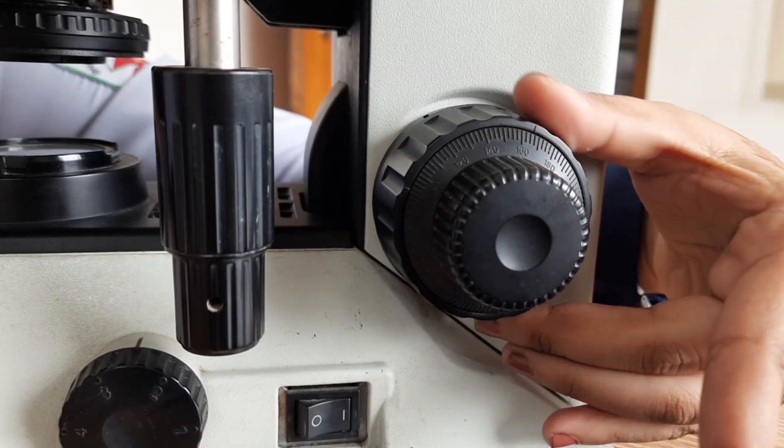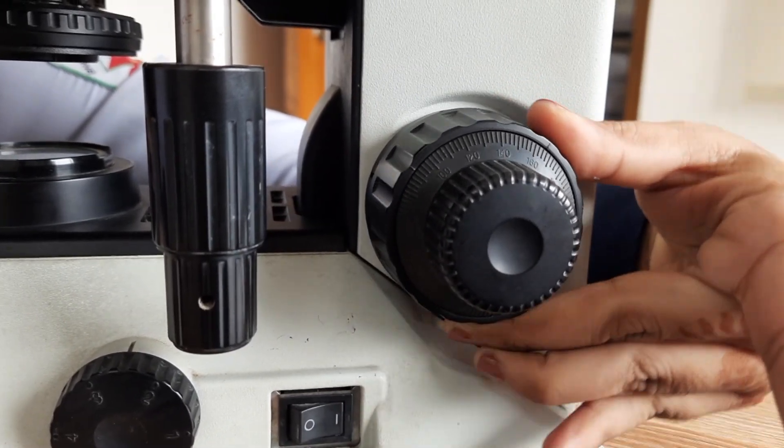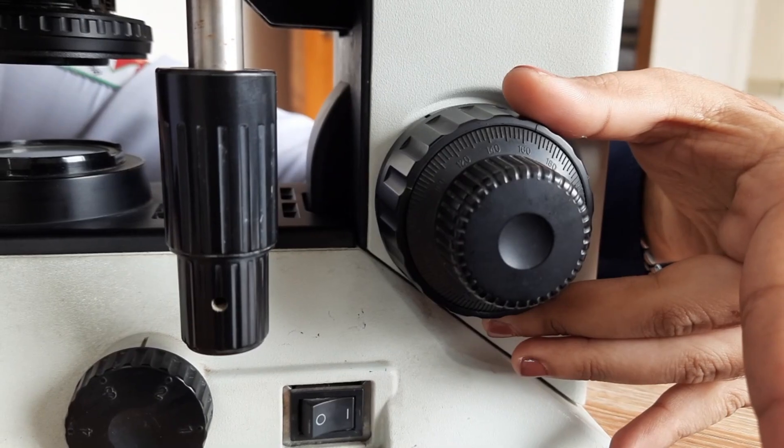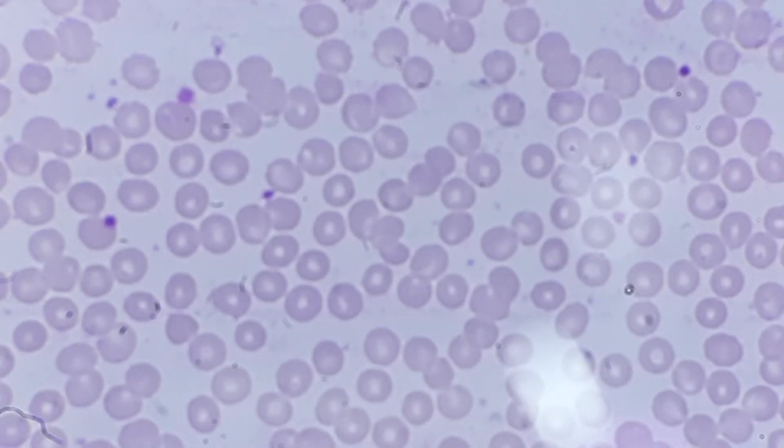To sharpen the image of your specimen, you use the focusing knobs. The coarse adjustment knob is for rough focusing and the fine adjustment knob is for fine-tuning the focus.